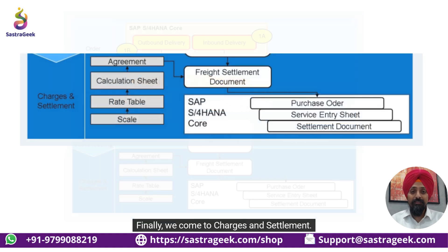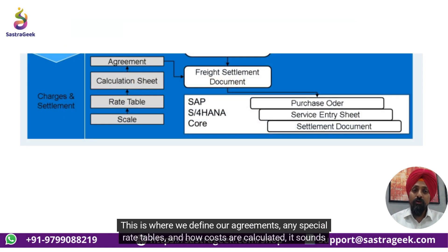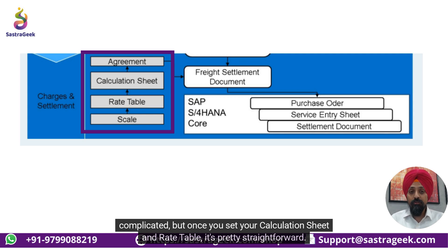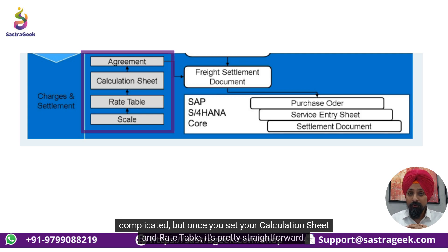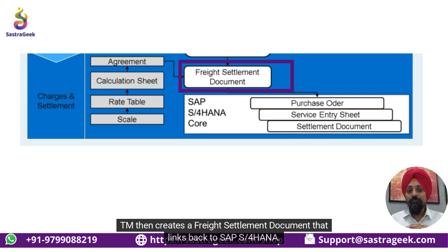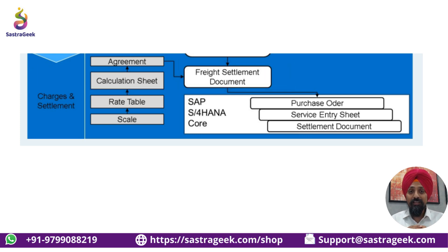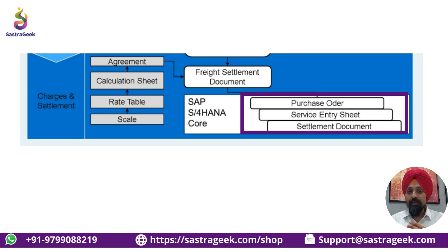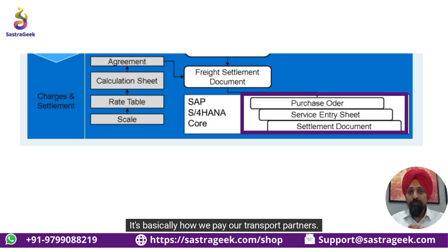Finally, we come to charges and settlement. This is where we define our agreements, any special rate tables, and how costs are calculated. It sounds complicated, but once you set your calculation sheet and rate table, it's pretty straightforward. TM then creates a freight settlement document that links back to SAP S/4HANA, so that can become a purchase order, a service entry sheet, or a settlement document for the vendor. It's basically how we pay our transport partners.